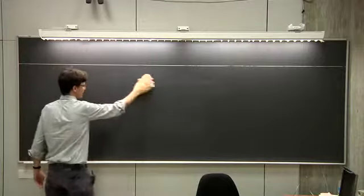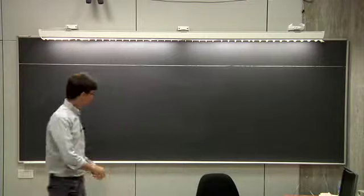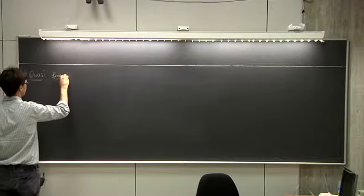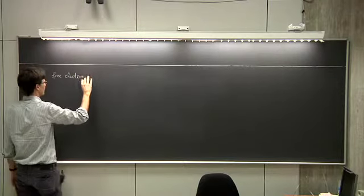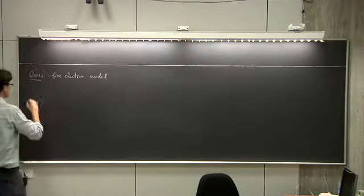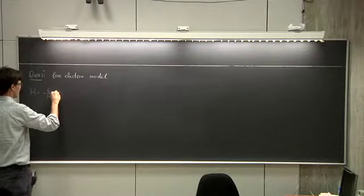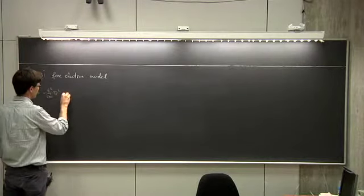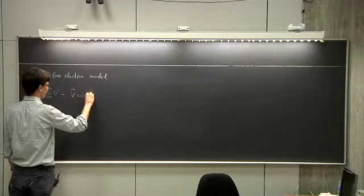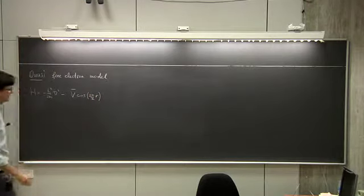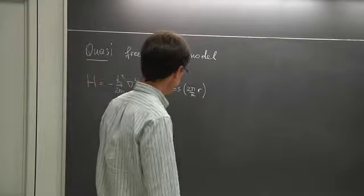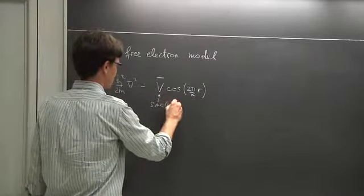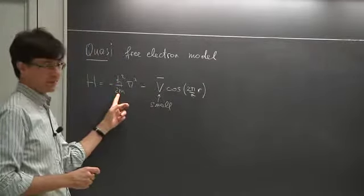Let me summarize quickly where we got last time. We were trying to solve the quasi-free electron model, defined by the Hamiltonian plus a perturbation term: minus V-bar times cosine of 2π/a times r, in one dimension. The assumption was that V-bar was small — small enough that we can treat this term as a perturbation over the free electron solutions.